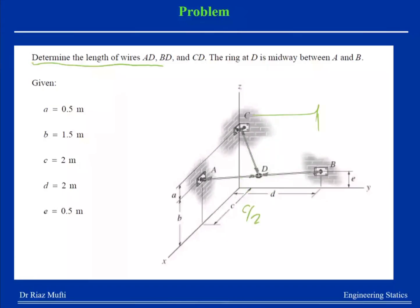Midway here means it's half d. If this is my a, the height of a, and this is my b, I can easily find this from b minus e. So I want you to find me the length AD, BD, and CD. You can find position vector AD or DA, so give me the magnitude which is the length.